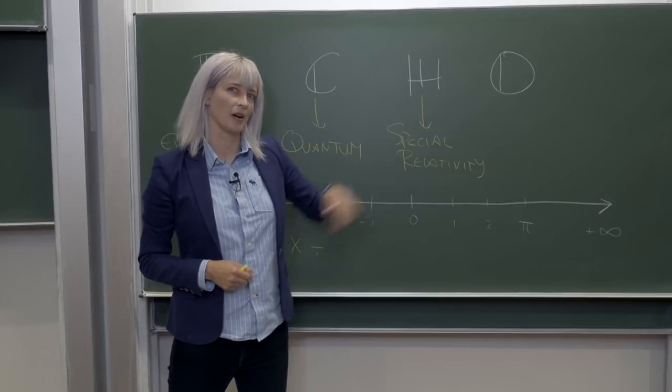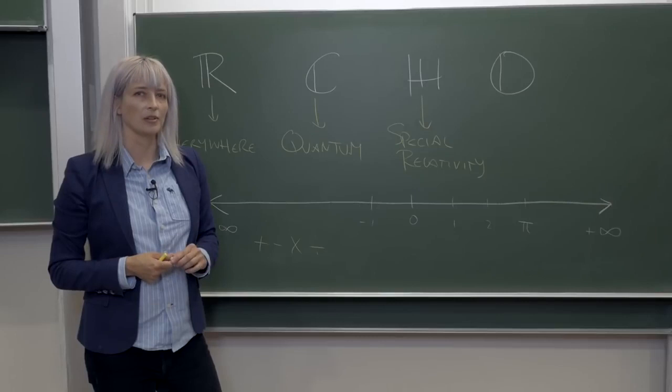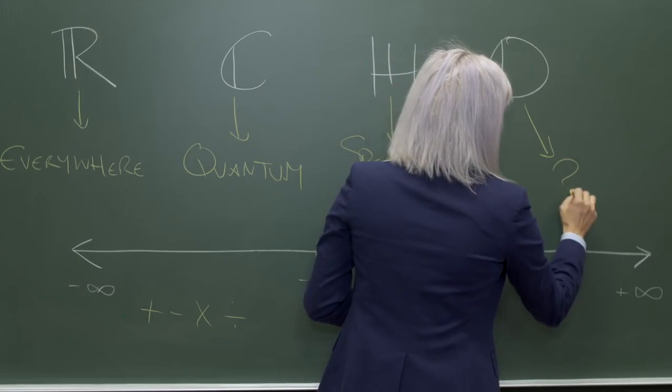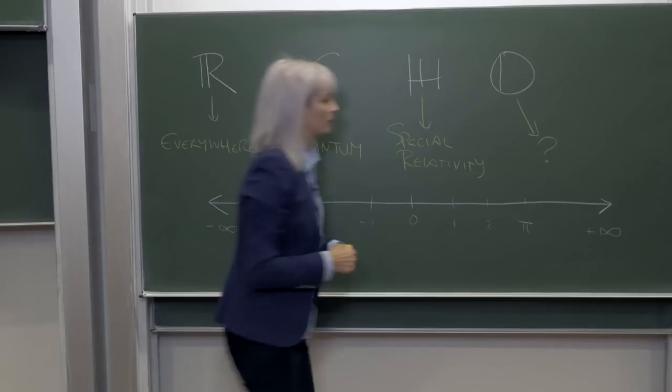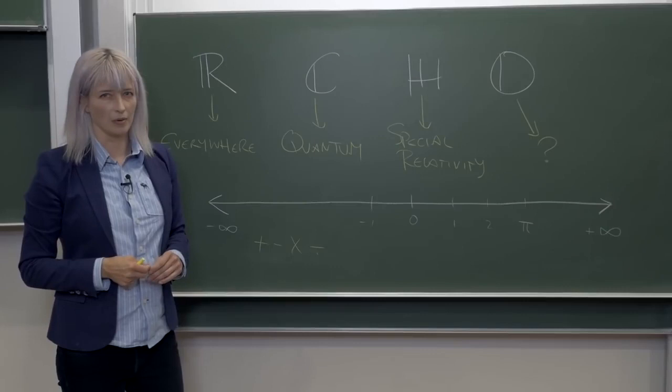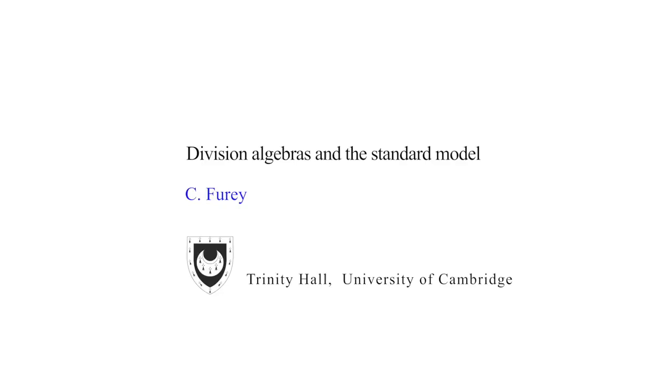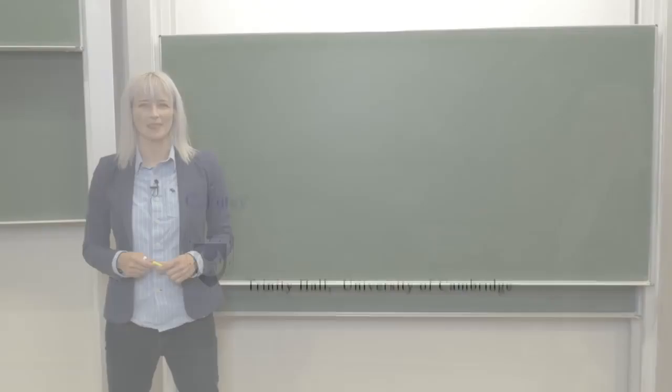The same year that the quaternions were found, so were the octonions. But in the 174 years since they were discovered, the octonions have not been found to be central to any major theory in physics. It is a little hard to believe, though, that nature would rely so heavily on the first three of these number systems and yet forget about the fourth.